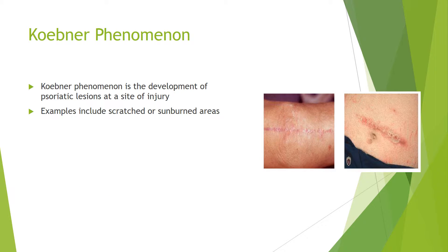An important feature of psoriasis is the Koebner effect, or Koebner phenomenon. This is a phenomenon where psoriasis lesions develop at a site of injury. Sites of injury can include scratches or sunburned areas, and this is a good example of how what looks like a scratch has led to psoriasis lesions.